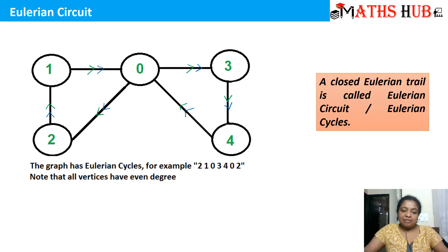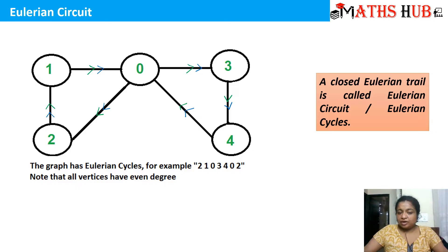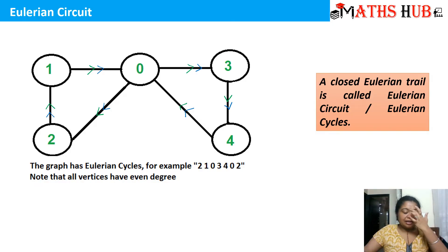Keep in mind that all the edges of the graph should appear exactly once, and you can travel the vertices any number of times. When talking about an Eulerian circuit, the initial and the final vertex must be the same.